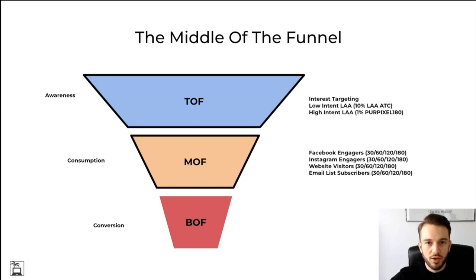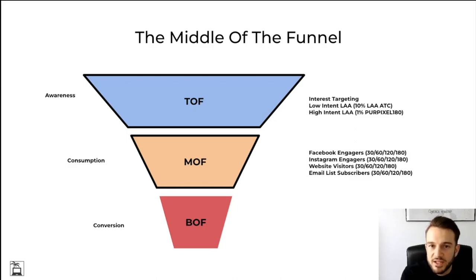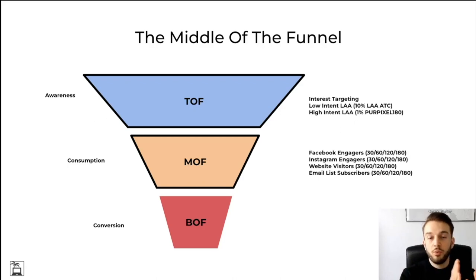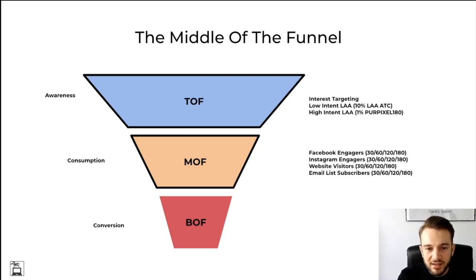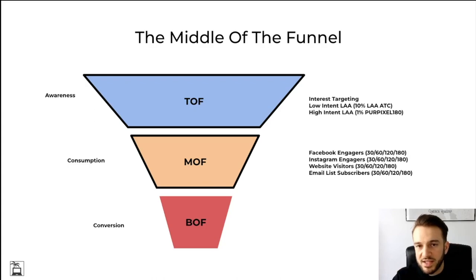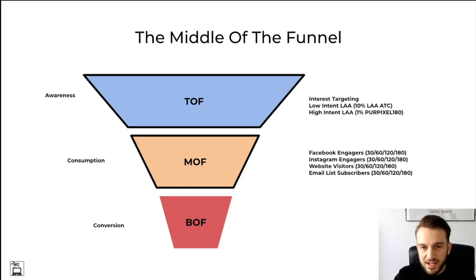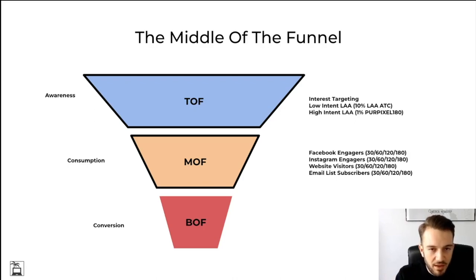Someone who engaged with the Facebook page in the last 30 days is obviously going to be warmer than someone who engaged 180 days ago — the shorter the span, the warmer the audience. But if the store isn't big enough, a 30-day engagement window will be a relatively small audience. You need to find the balance: an audience that is large enough to retarget but also the warmest possible. The same logic applies to Instagram engagement and website visitors — someone on the website within the last 30 days will recognize your ads faster than someone who visited 179 days ago.